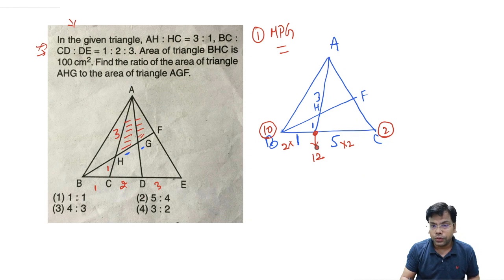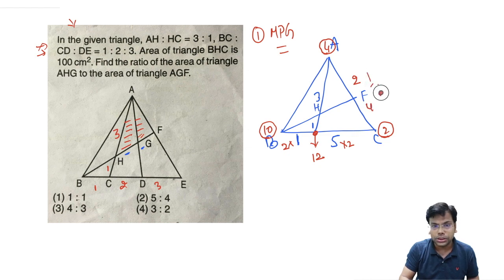12 minus 12, that means nothing but 4. So we can say the ratio is 2 is to 4, or the ratio is 1 is to 2. So this ratio is 1 is to 2. Fine.